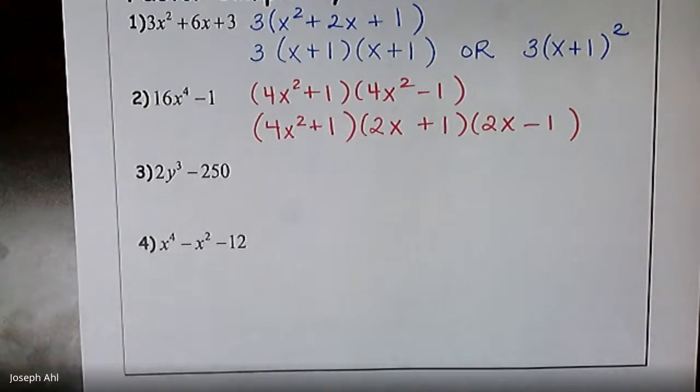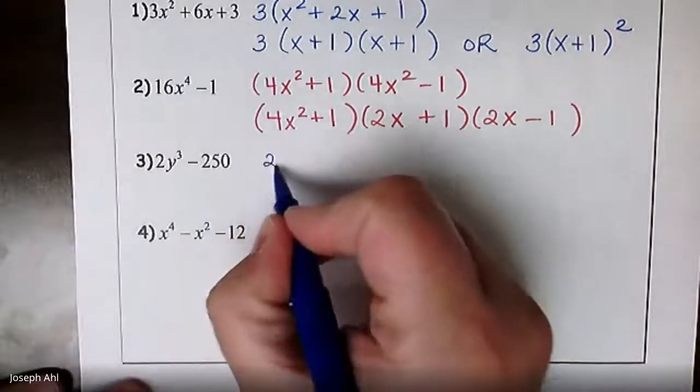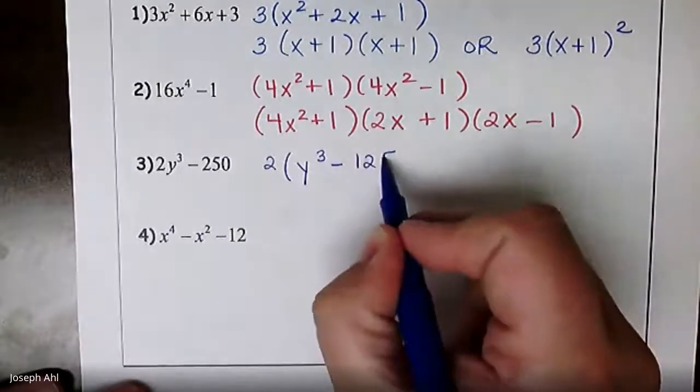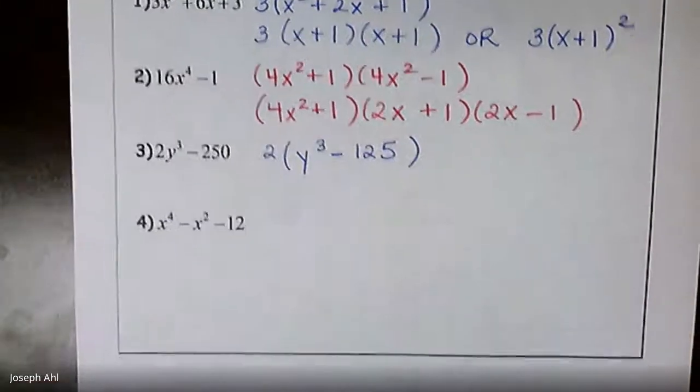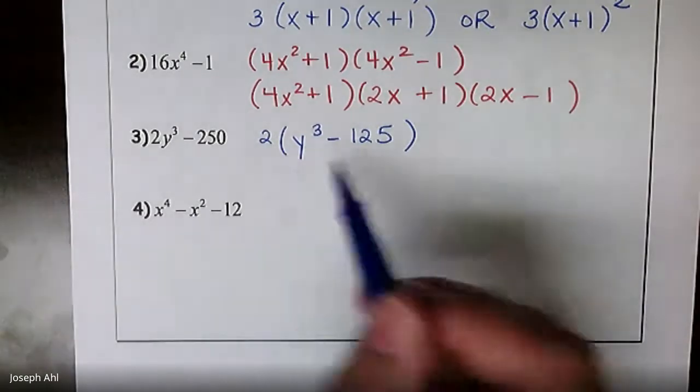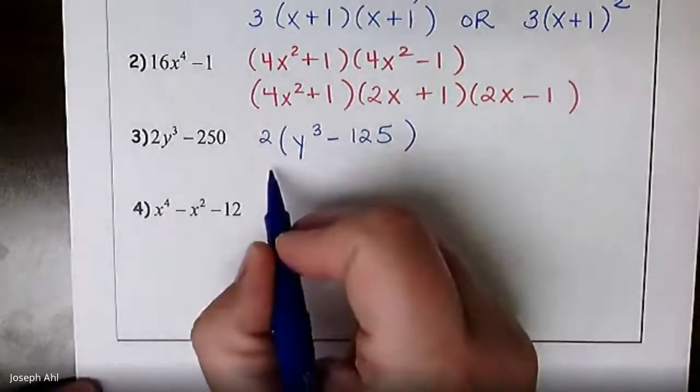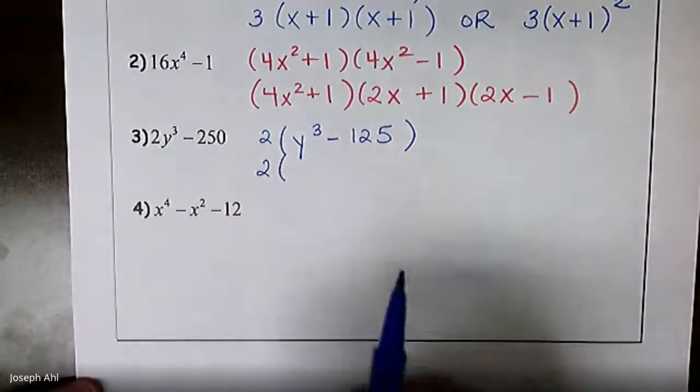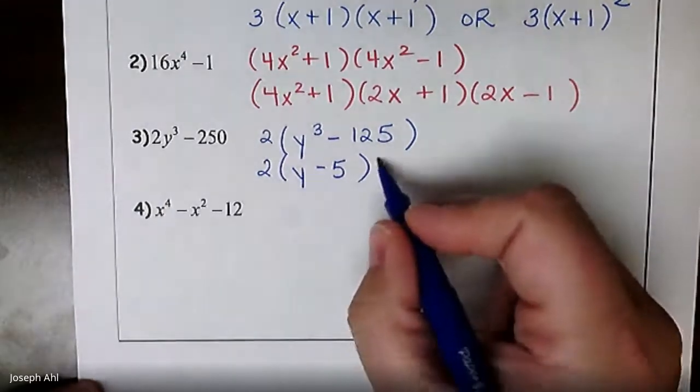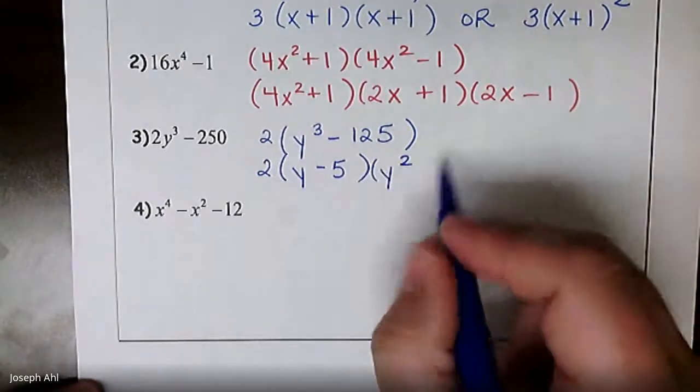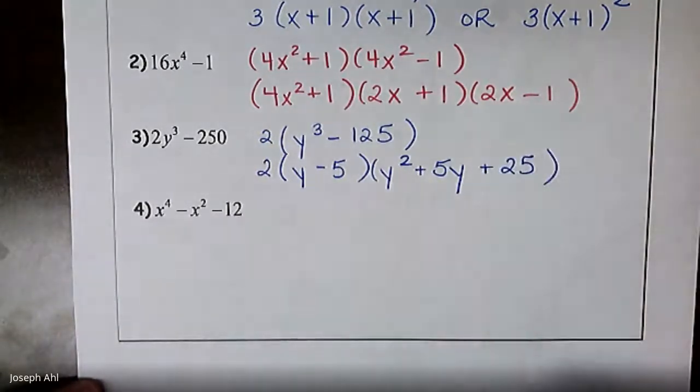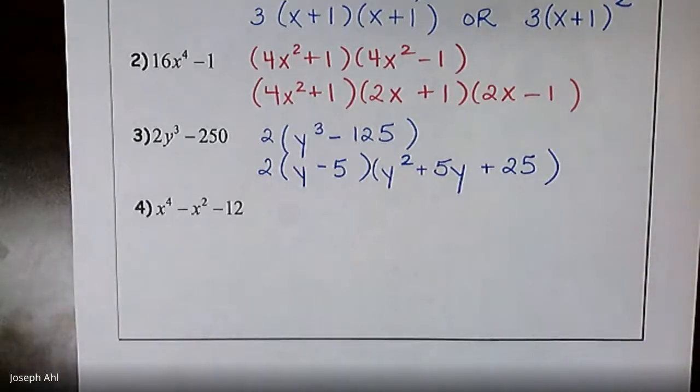Two more, we've got 2y³ - 250, so the first thing I'll do is take out a GCF of two. Hopefully you noticed that right away. Two goes into 250 125 times. And I really like that that is what I'm left with, because I know that 125 is a perfect cube. And of course, y³ is as well. So if I remember that cubed pattern, make sure you bring the GCF of two down to the next step. You would have y - 5 as your binomial. And then the trinomial would be y² middle multiply, plus 5y, and then at the end, plus 25. So there's your final answer for number three.